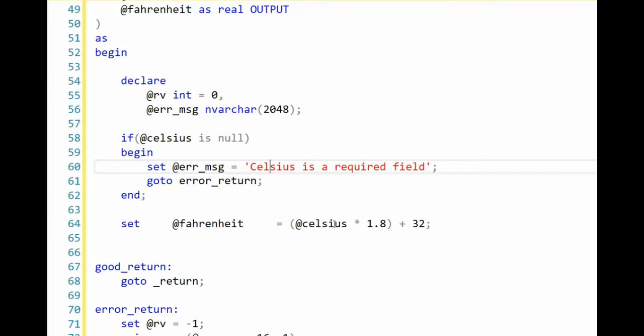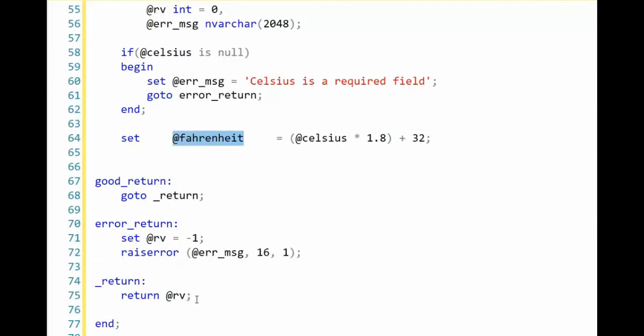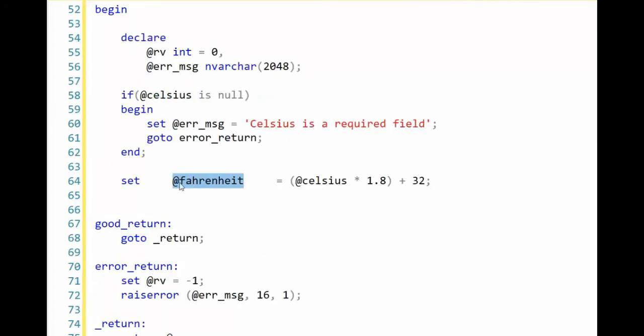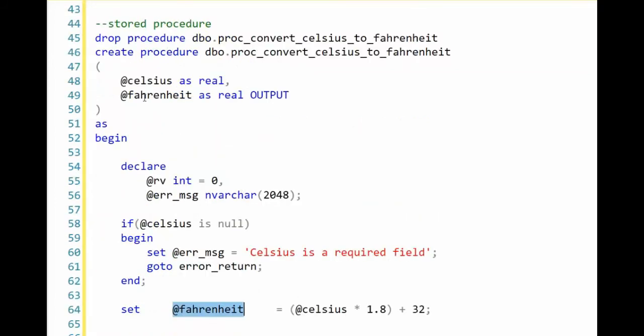Then if it's success, I just come down here, I do the math to convert Celsius to Fahrenheit. And I keep falling through there. And I just go to underscore return. And I also return RV, which I initialized it to zero. Notice that set at RV is the name of my output variable and through my parameters.